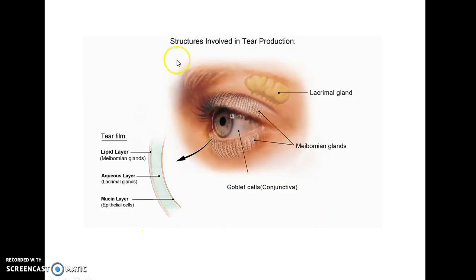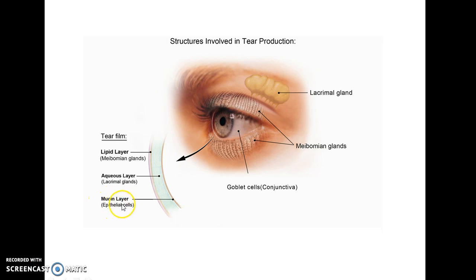This picture shows the structures involved in tear production and the various layers of tear film. The layers from posterior to anterior are: the mucin layer, produced by the epithelial cells or goblet cells of conjunctiva; the aqueous layer, produced by the lacrimal glands; and the lipid layer, produced by the meibomian glands.